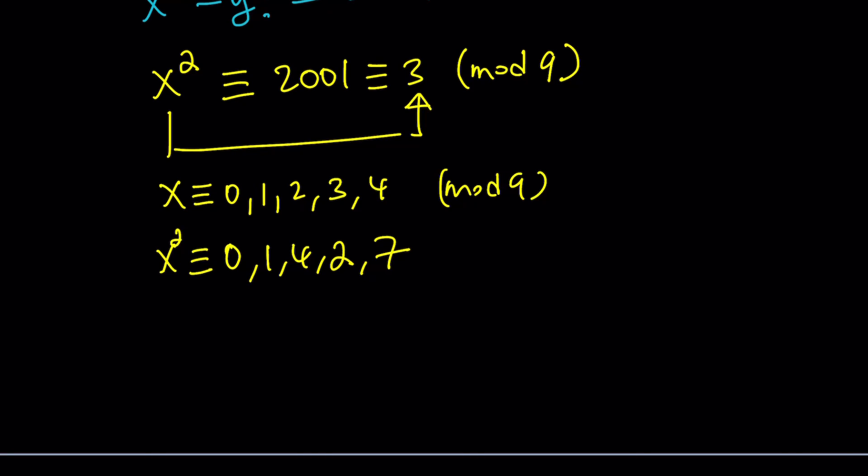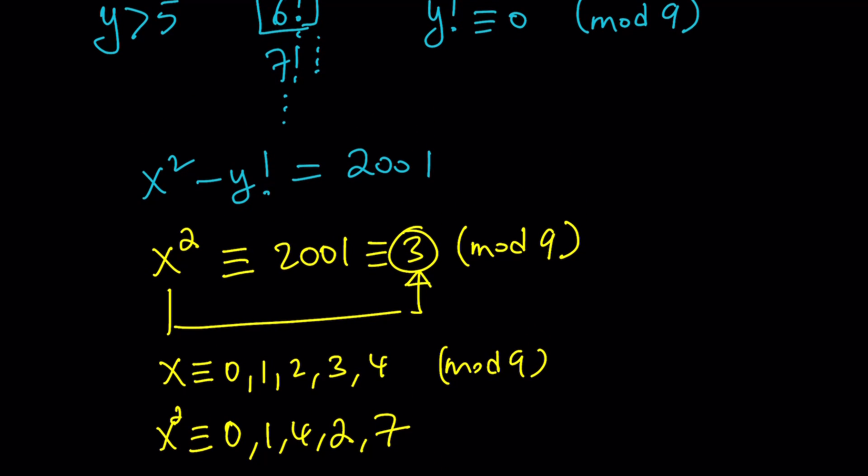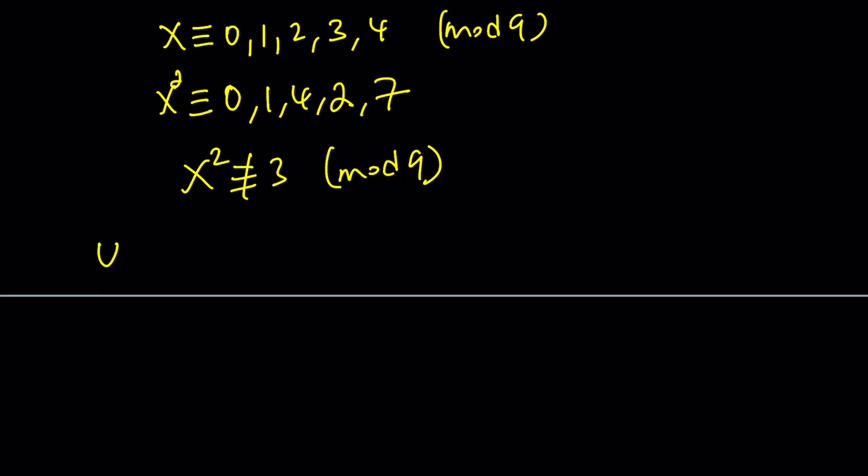What does that mean? It means that you are not going to be able to get a 3. x² will never be 3 mod 9 if x is an integer. Therefore, this equation has no solutions. But we said we are checking for y greater than 5, which means y should not be greater than 5. Therefore, y needs to be less than or equal to 5. We can find a boundary. In this case, it tells us y needs to be less than or equal to 5. And then we are just going to test it.